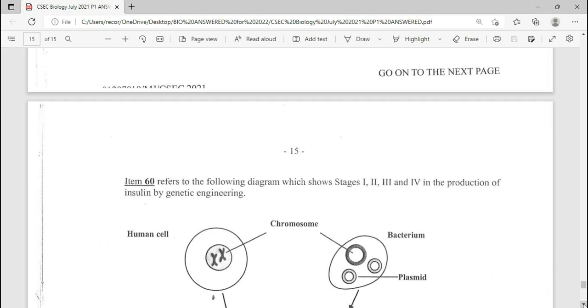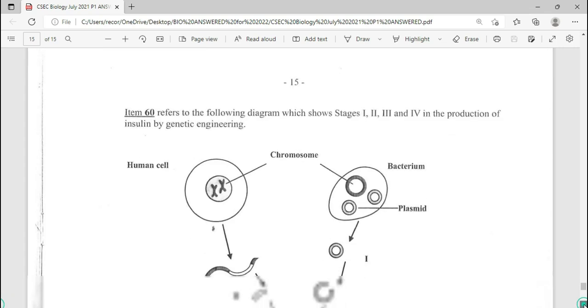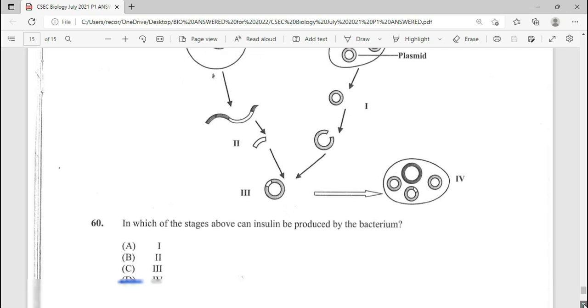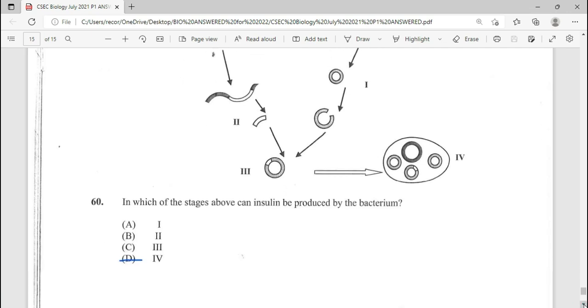Item 60, repeated question. Item 60 refers to the following diagram which shows stages 1, 2, 3, and 4 in the production of insulin by genetic engineering. So you're seeing the diagram on screen, popular diagram in your textbook. In which of the stages above can insulin be produced by the bacteria? Answer there being 4.